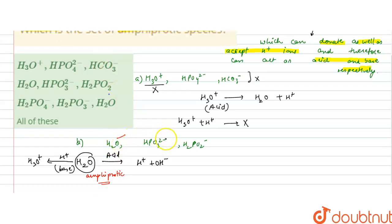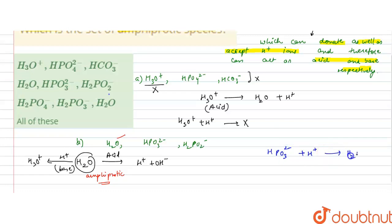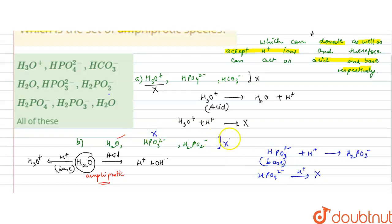Now checking HPO₃²⁻: it can accept H⁺ ions to form H₂PO₃⁻, so it acts as a base. However, HPO₃²⁻ cannot release H⁺ ions, meaning it cannot act as an acid. Therefore HPO₃²⁻ is not an amphiprotic species, and this whole set cannot be the correct answer.